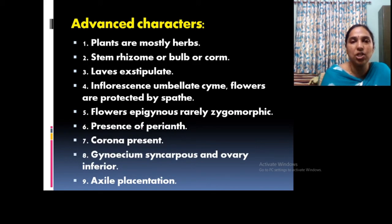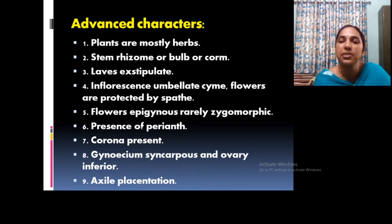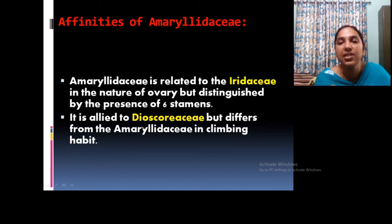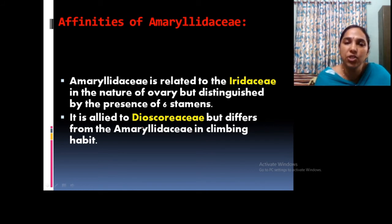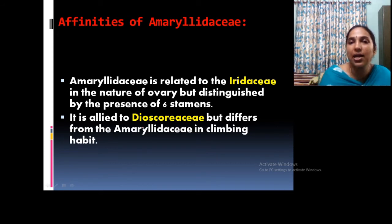Primitive characters include simple leaves, solitary flowers, and bisexual condition. Advanced characters include rhizomatous, bulb, or corm-like nature; epigynous condition; corona presence; perianth condition; and syncarpous inferior ovary. Regarding affinity, Amaryllidaceae shows affinity with Iridaceae — a related family — distinguished by the nature of the stamens and ovary. These members also show affinity with Dioscoreaceae, though most Dioscoreaceae are climbing in nature.